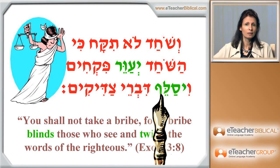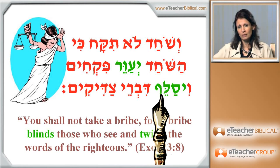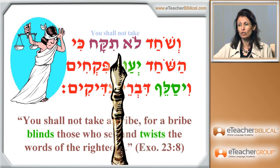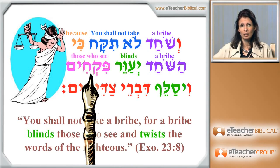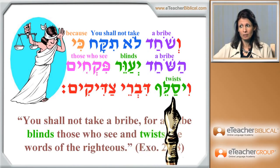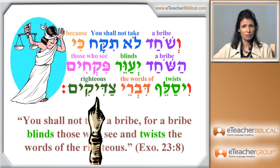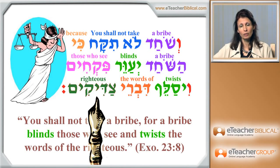And why is that? It's because we are dealing now with a general truth. It's not an action that happens at a specific temporal point. Altogether: bribe — you shall not take a bribe — because bribe blinds those who see, and altogether, bribe twists the word of the righteous. We are not talking about one tiny point in the tense or a period; we talk about a general truth. And so this is Iktol — Iktol can do that also.